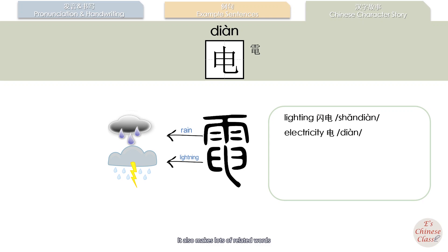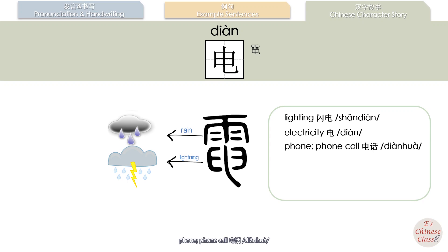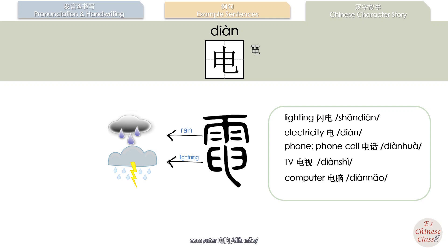It also makes lots of related words. For example: phone / phone call — 电话; television — 电视; computer — 电脑; movie — 电影.